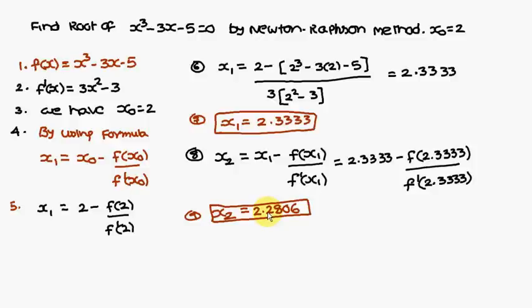Calculating this gives x₂ as 2.2806. Similarly, x₃ is 2.2790 and x₄ is 2.2790. If you observe x₃ and x₄,